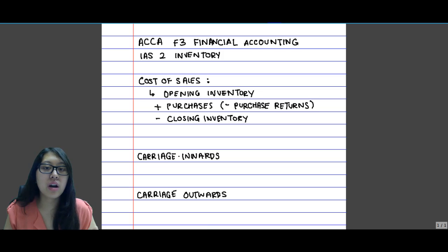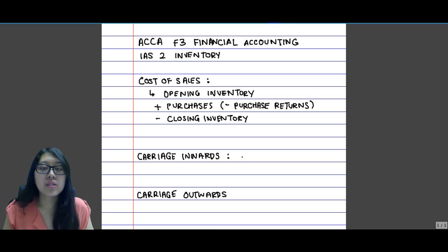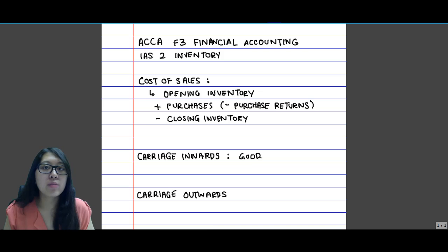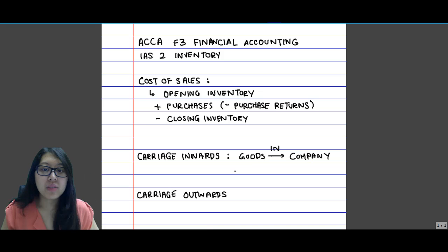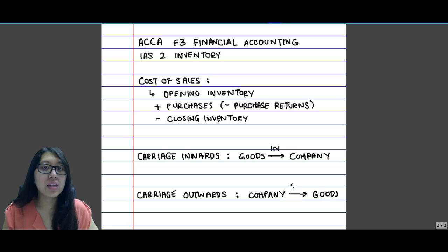Carriage relates to the cost of having to transport goods either into the company or out of the company — you're paying a carrier. Carriage inwards is when you have to pay for a carrier for bringing the goods into your company, whereas carriage outwards is when the company incurs carrier costs for transporting the goods outside, meaning the company is the one selling the goods to the customers.